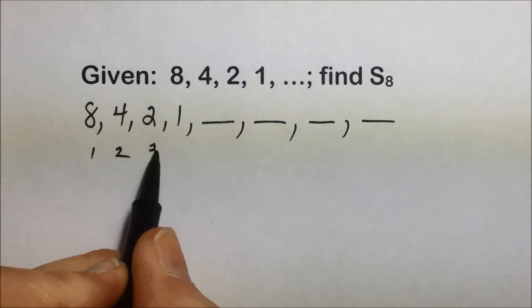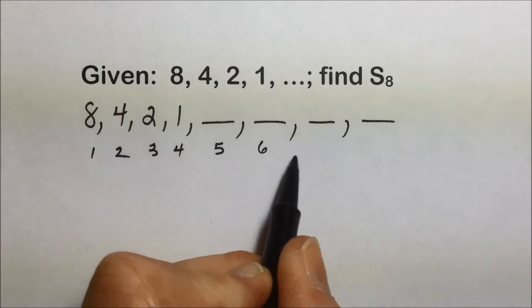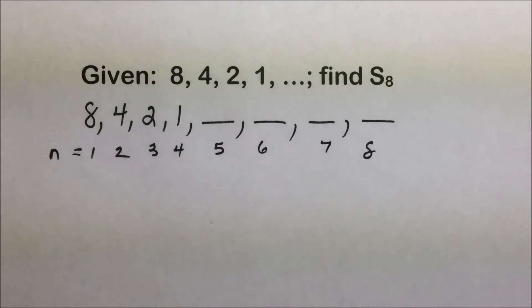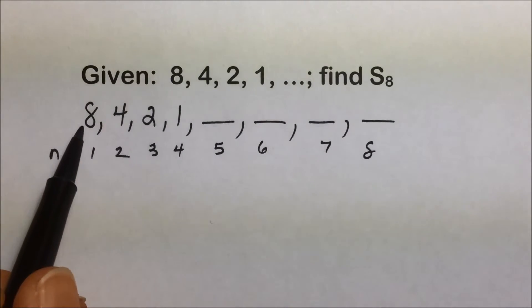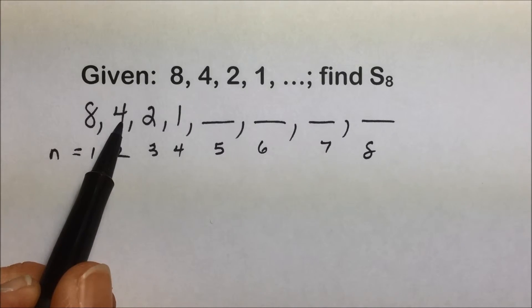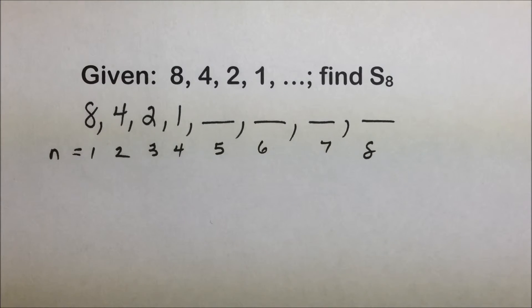And to help us, again, to come up with a rule for those terms, it helps to identify what term number they are. And if you notice, 8 is being divided by 2, which gives us 4. 4 divided by 2 is 2. 2 divided by 2 is 1. This is dealing with a base of 2, where our powers are decreasing all along.